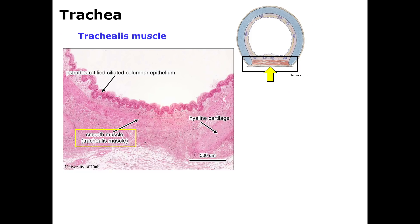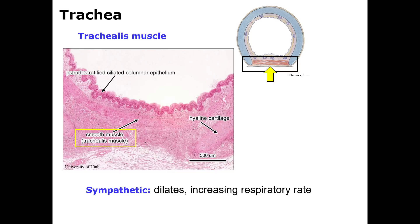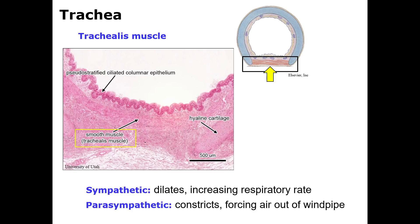The trachealis muscle is a bundle of smooth muscle that bridges the open end of the C-rings and is bounded by a sheet of fibroelastic tissue attached to the perichondrium. This muscle relaxes during swallowing to facilitate the passage of food by allowing the esophagus to bulge into the tracheal lumen; the elastic layer prevents excessive distension. Under sympathetic control, the trachealis also relaxes, allowing dilation of the trachea to increase respiratory rate — think the fight-or-flight response. The muscle strongly contracts in the cough reflex to narrow the tracheal lumen, increasing velocity of expelled air. Constriction is under parasympathetic vagus control.